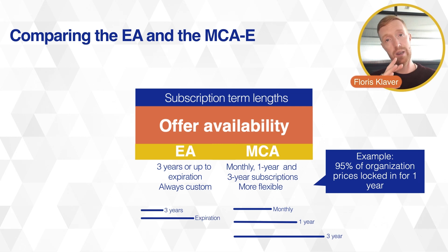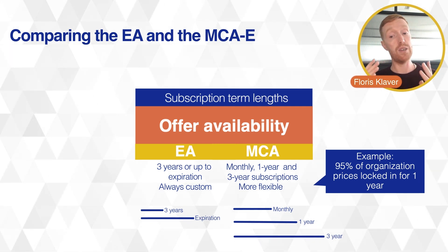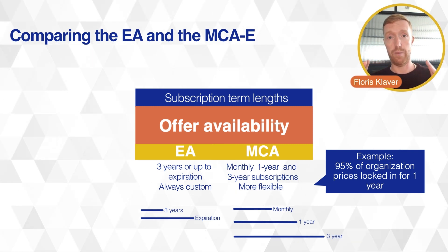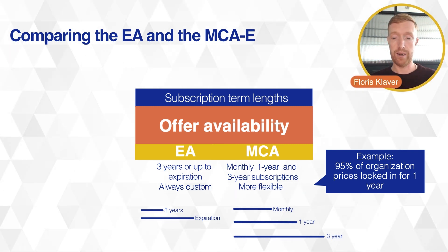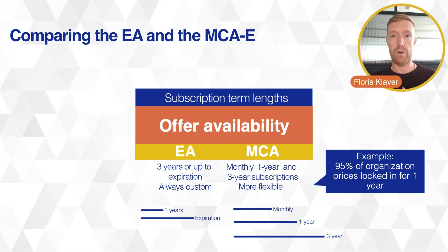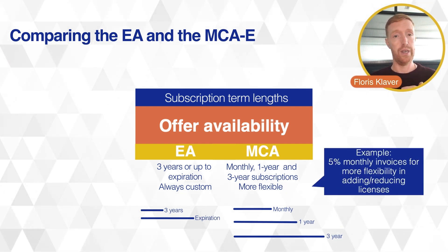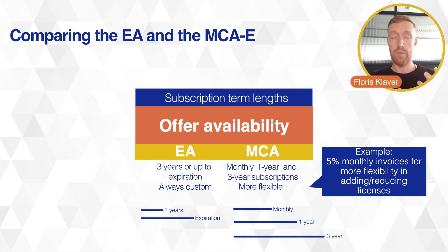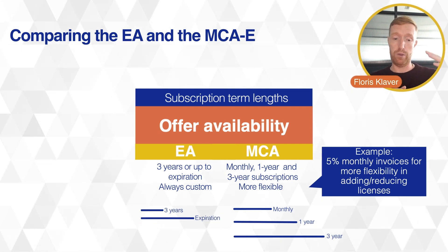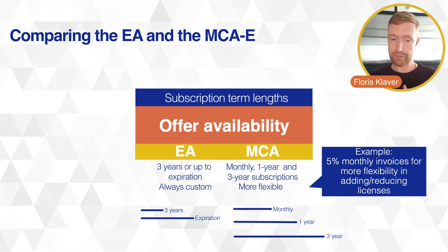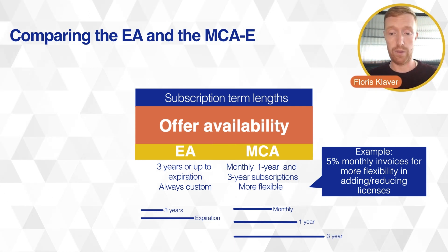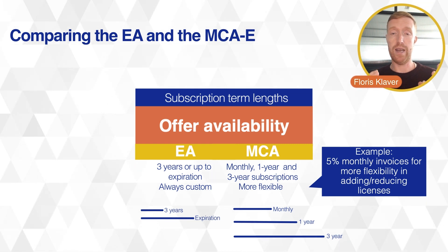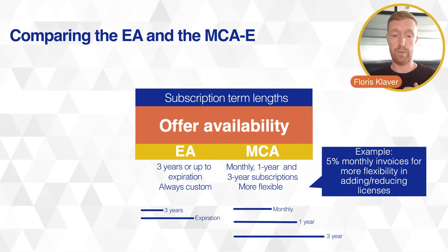For example, for 95% of your organization you could lock in prices for a year because you know you'll be using those for the entirety of that year with no fluctuation. For the remaining 5%, you could choose monthly invoices so you can reduce those as you go along. The percentages can obviously differ to whatever works for you, allowing you to build in more flexibility and handle fluctuation more easily.